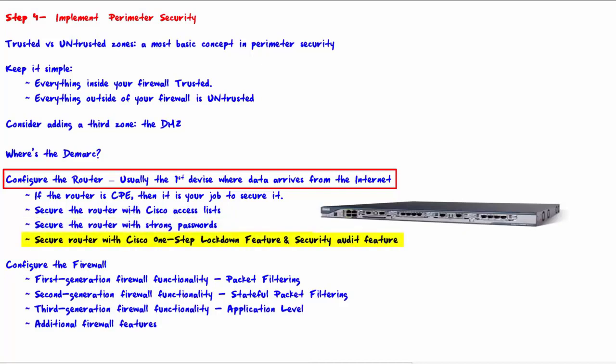Cisco has two features that help secure their routers: the one-step lockdown feature and the security audit feature. You can use one or both of these features in a semi-automated way to secure the router using guidance provided by Cisco. If you have another brand of router, then you can use similar features based on that brand.